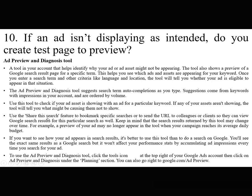If any of your assets are not showing, the tool will tell you what might be causing them not to show. Use the 'Share this search' feature to bookmark specific searches or send the URL to colleagues or clients so they can view Google search results for that particular search. Keep in mind that results may change over time — for example, a preview of your ad may no longer appear when your campaign reaches its average daily budget.